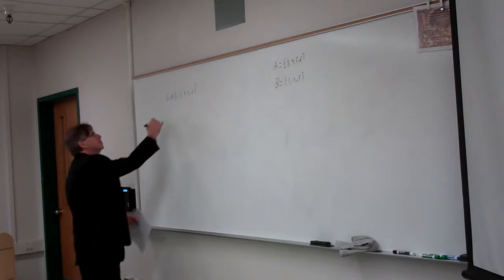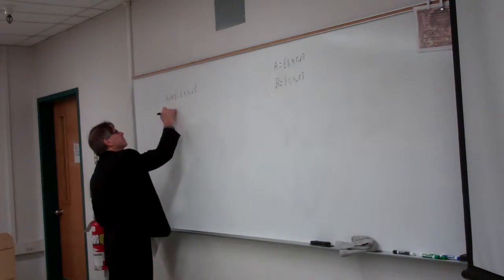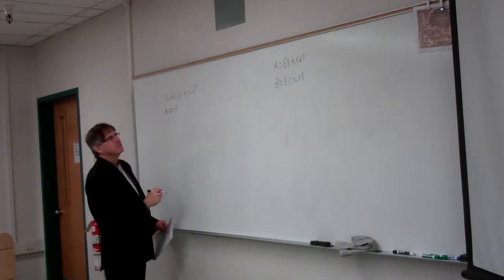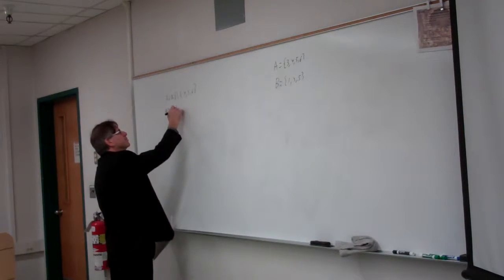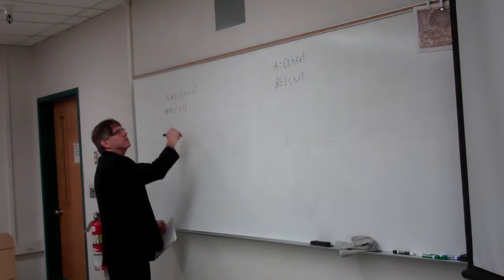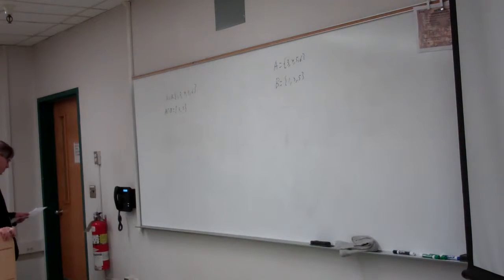The intersection is the set of things that are in both sets. So it can't be a 1. It can only be a 3 and a 5. And it can't be the 4 or the 6 because those aren't in B.